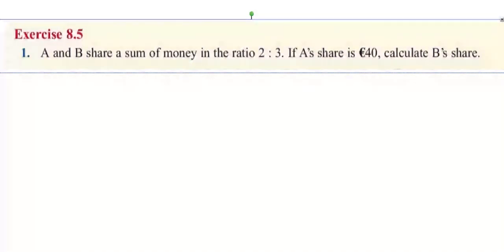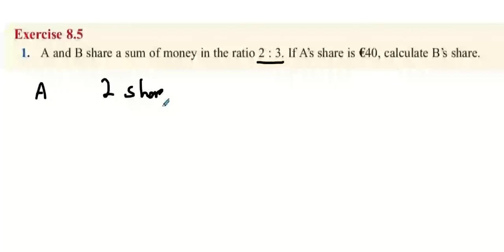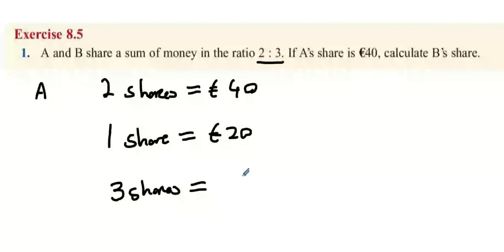Exercise 8.5, question 1. A and B reserve a sum of money in the ratio 2 to 5. Two shares belong to A, and we're told two shares is 40 euro. This implies one share is 20 euro. B has three shares, so we multiply by three to get 60 euro — that is what B has.